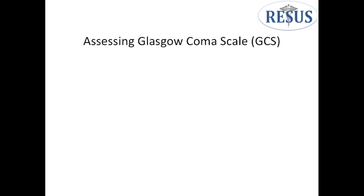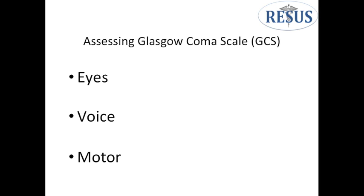GCS stands for Glasgow Coma Scale. It is a measure of a patient's level of consciousness. It is composed of three parts: patient eye opening, patient's ability to talk, and patient's motor function. Each are scored differently.